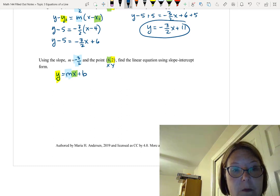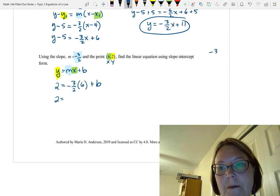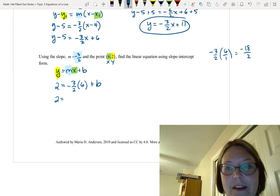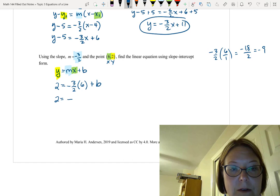So let's do all replacements. y is 2, so that's on the left is 2. mx would be negative 3 halves times 6, and then we'll have plus b. Make sure your b doesn't look like a 6. So now we have 2 equals negative 3 halves times 6 over 1, which is going to be negative 18 halves or negative 9. So now we have 2 equals negative 9 plus b.